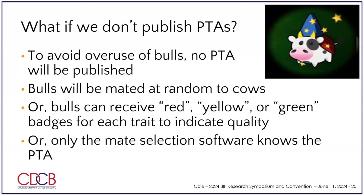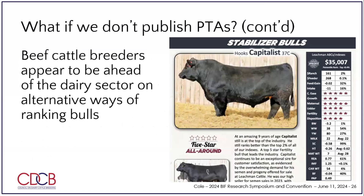So how do we get them to ignore that? What if we don't publish the PTAs, or we show them green for good bulls, yellow for average bulls, and red for low quality bulls? Maybe only the mate assignment software knows the PTAs but not the people. I was looking at the Leachman cattle catalog and I saw they have at the top the overall index, but then for growth traits and disposition traits they have stars — not the individual numbers. You guys are already ahead of the dairy guys on this. That's giving a measure of quality without people obsessing over 'this bull is two points higher than that bull.'